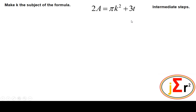Make k the subject of the given formula. The formula is 2a = πk² + 3t. What we are required to do is to have k all by itself on one side of the equation — preferably the left hand side — and everything else on the other side. That's our objective.